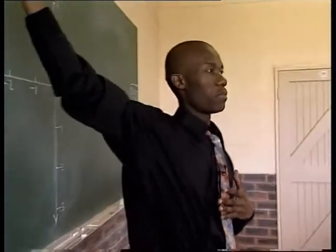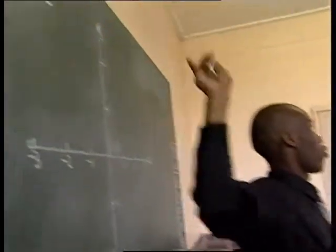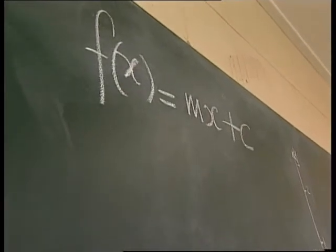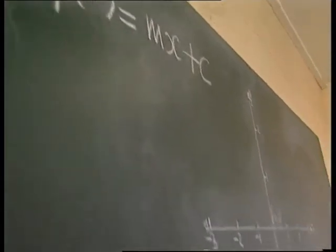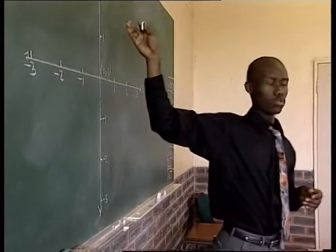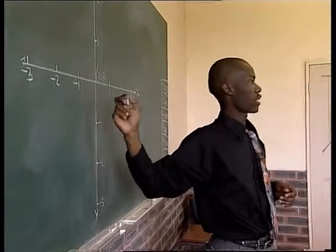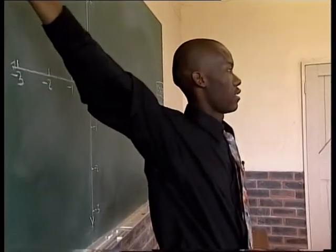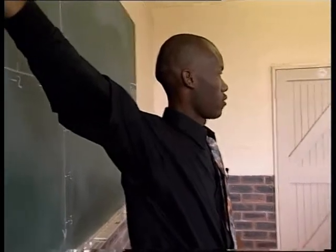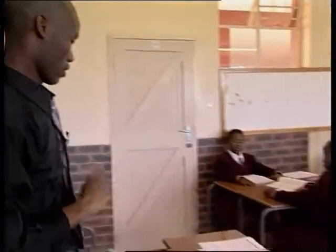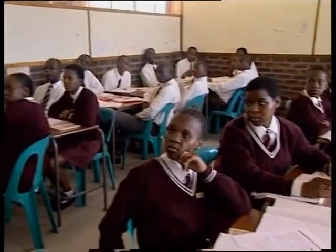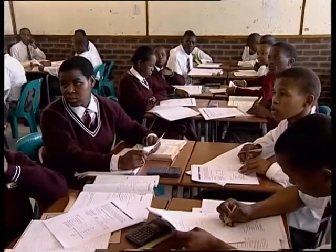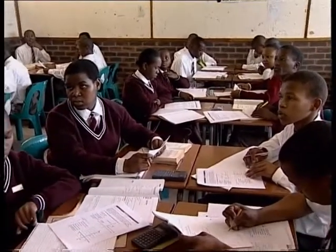This is just an algebraic equation that you must present here in terms of a graph. So whatever you draw on the Cartesian plane represents that equation. Now, in that equation, we've got a number of variables. We've got m, we've got x.